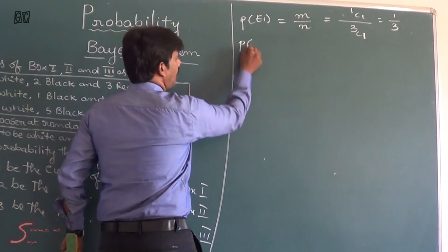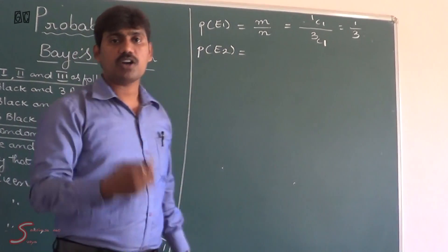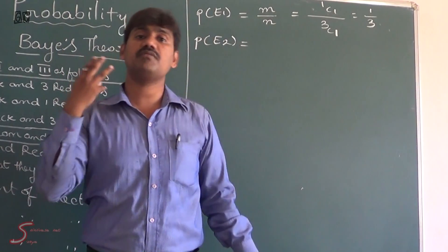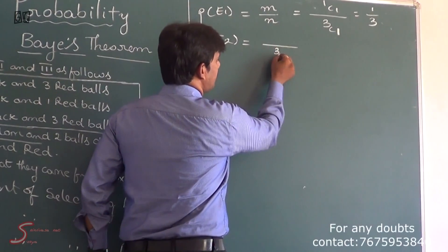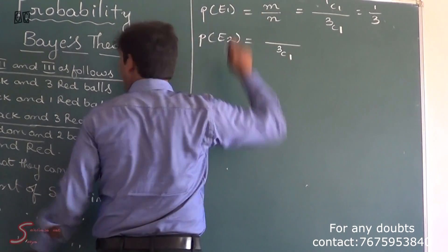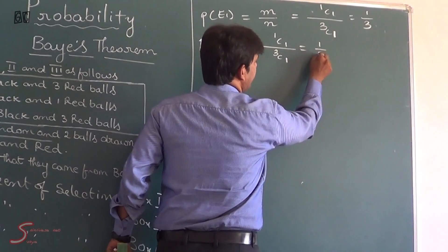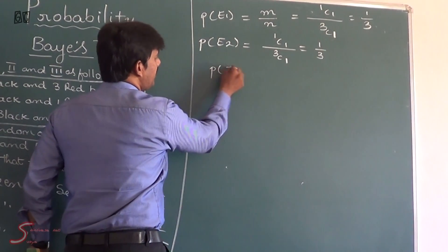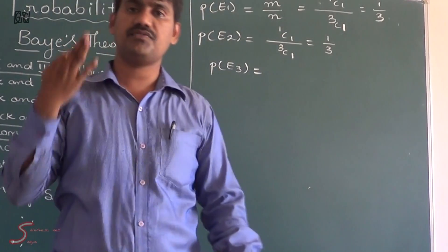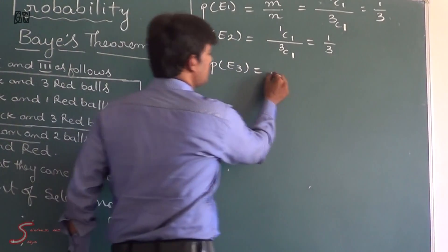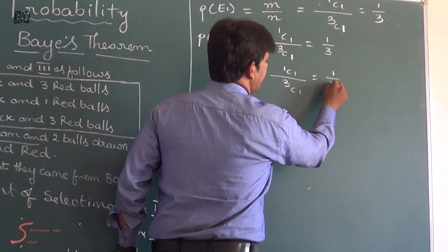In the same way, P(E2) is the probability of selecting box 2. We have three boxes; out of three boxes we select one box that should be box 2. So that is again 1 by 3. Similarly, P(E3) is the probability of selecting box 3. Out of three boxes I am going to select one box, so that is again 1 by 3.